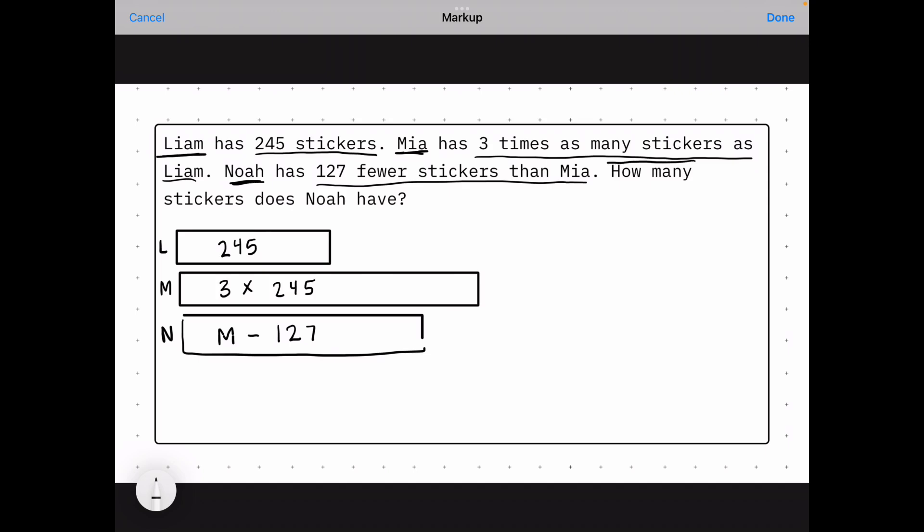Then the question is asking, how many stickers does Noah have? So really, I'm going to put a question mark next to Noah to remind myself that this is the box that's going to help me find my answer. Now I've got to work backwards. I can't solve this problem until I know how many stickers Mia has. So I'm going to take 245 times that 3 to find out how many stickers Mia has.